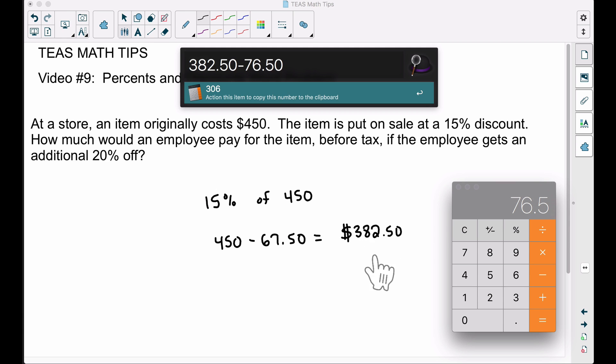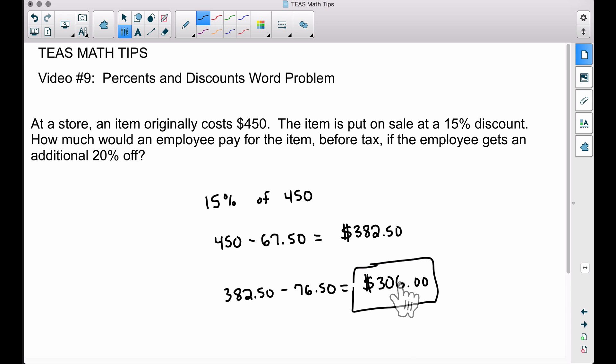Therefore, if we subtract $76.50 from the $382.50—remember, we are subtracting that because the employee's getting an additional discount on top of the 15% discount—so subtracting that, we get $306. This will be how much money the employee pays.